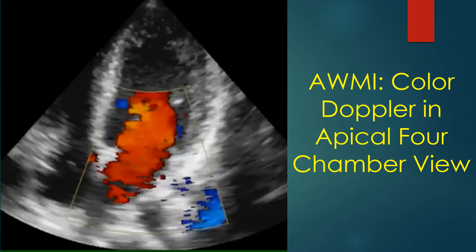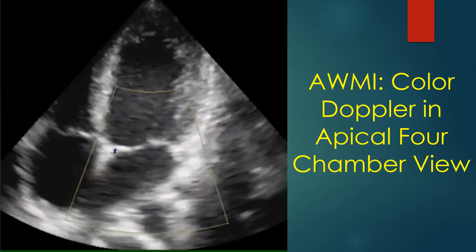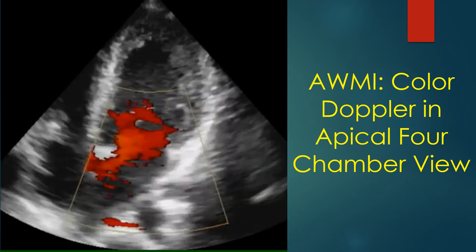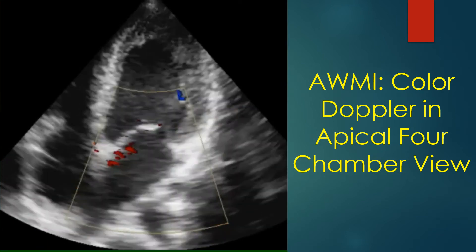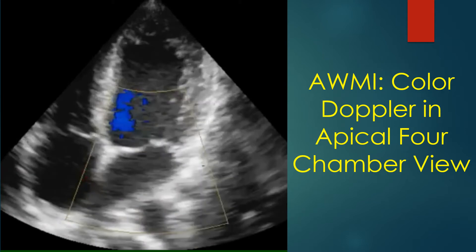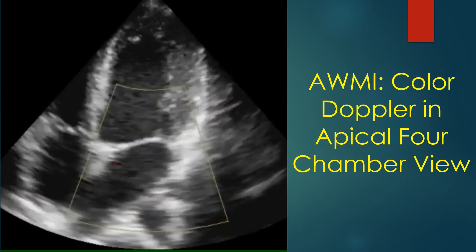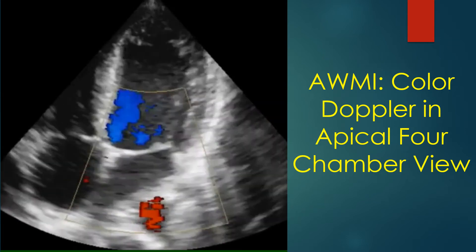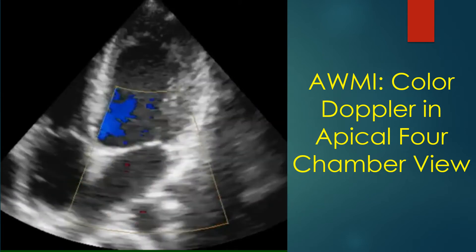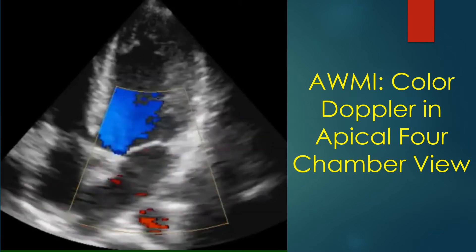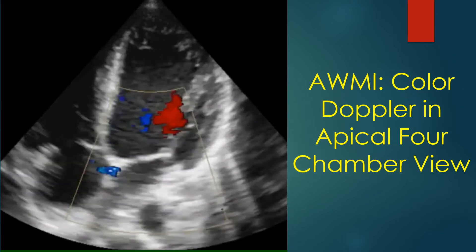Colour flow imaging in apical four-chamber view. The red flow is diastolic mitral flow towards the transducer, and the blue flow is away from the transducer towards the left ventricular outflow tract.